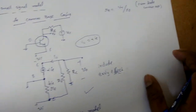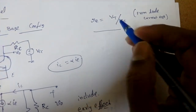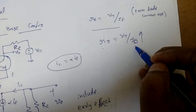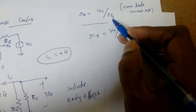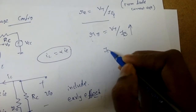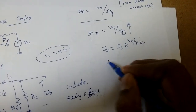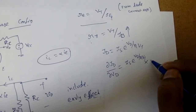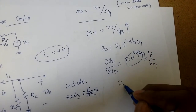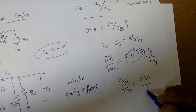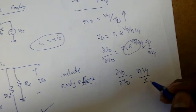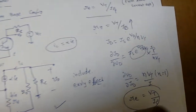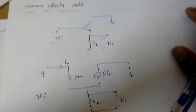Now, how to find r_e: in the previous lecture we saw r_pi equals V_T divided by i_b, because we are looking into the base. When looking into the emitter, it becomes V_T divided by i_e. From the diode current equation, i_d equals I_s times e to the power (V_d / η·V_T). The resistance is δV_d / δi_d, which gives η·V_T divided by i_d. Since η equals 1 for larger currents and the input current is the emitter current, r_e equals V_T / i_e.